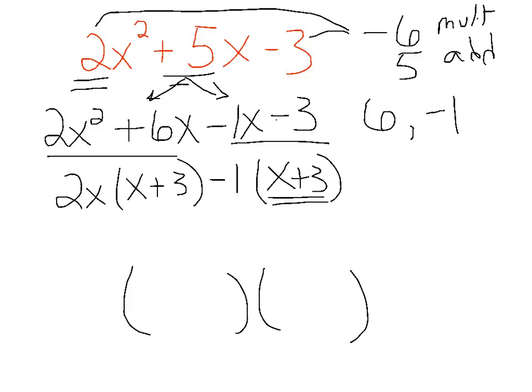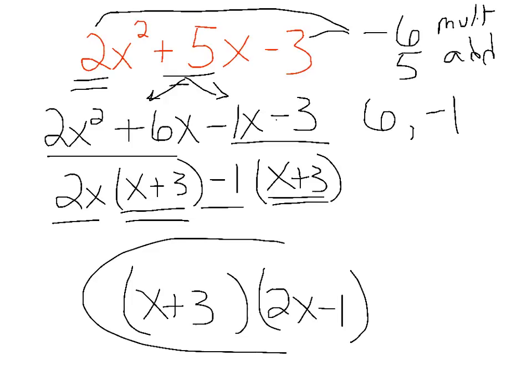And if you do this process correctly, what's in these two parentheses will always match, and that'll be one of your factors, x plus 3. And then the other factor will come with what remains if you were to erase the x plus 3s, and that is 2x minus 1. We have factored this correctly.